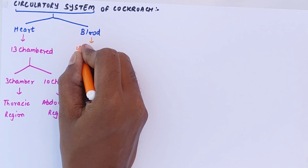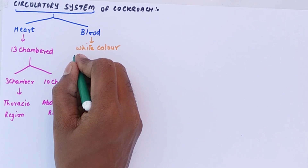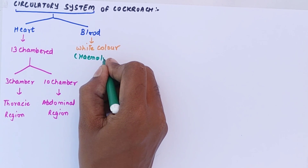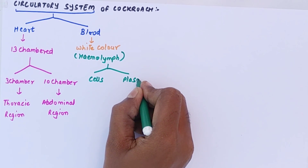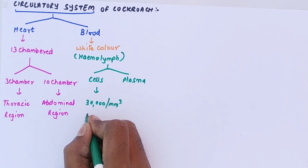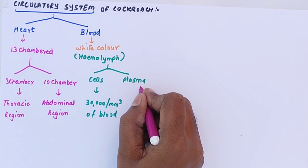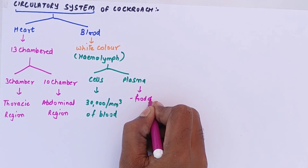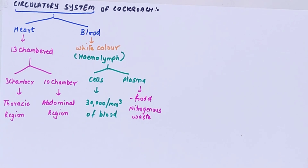Cockroach belongs to Arthropoda, which is called hemocoelomates, so the blood will be white in color. This white-colored blood is called hemolymph, and it consists of two components: cells and plasma. There are 30,000 hemocytes present per millimeter cube of blood. The plasma consists of food and nitrogenous waste. The blood in cockroach does not carry any respiratory gases.